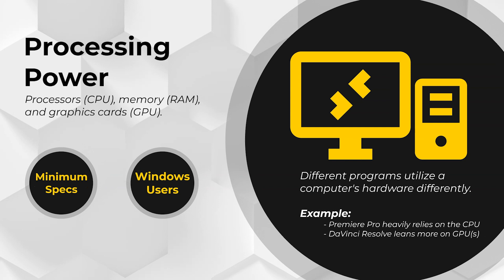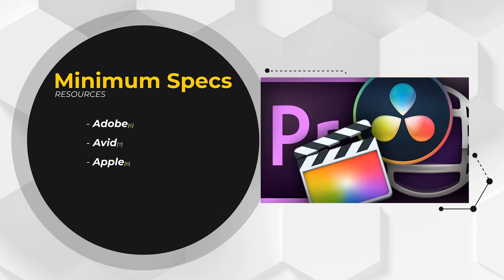Different programs rely on the separate parts of your computer in different ways. If you intend on editing only in Adobe Premiere, then you need to get the very best processor you can afford followed by a good graphics card. If you're frequently jumping from Premiere to DaVinci Resolve, invest in a better graphics card or multiple graphics cards because DaVinci relies heavily on the GPU. No matter what, more RAM or memory is always a good idea — 16 GB of RAM should be your absolute minimum if you're serious about video editing.